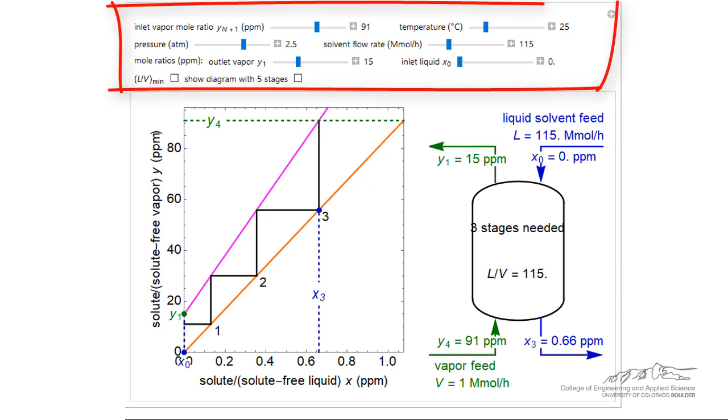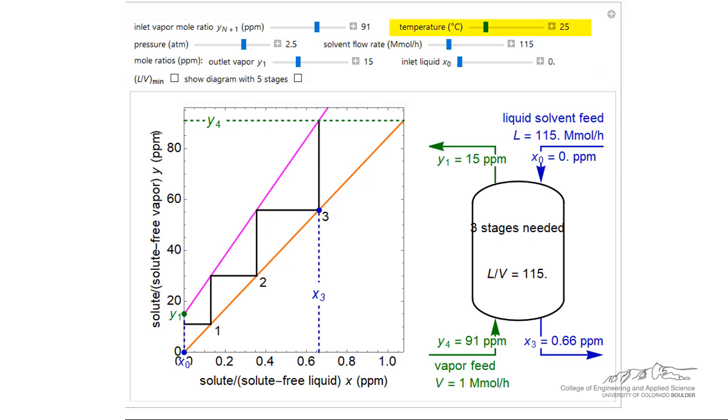The absorption process is impacted by numerous factors and this dynamic simulation does an excellent job of showing how these parameters change the operating line, equilibrium line, and number of stages. First, we will vary the temperature. The Henry's Law constant is a function of temperature and as we increase the temperature, the slope of the equilibrium line changes.